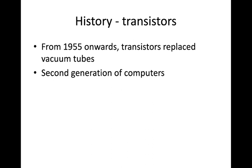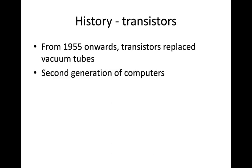Then transistors came. There are different kinds of transistors that were developed, and using these transistors a lot of computers were developed. Transistors replaced vacuum tubes. We can consider transistors as the beginning of second generation computers. Different types of transistors — MOSFET, FET and others — were used to develop different types of computers during that period.